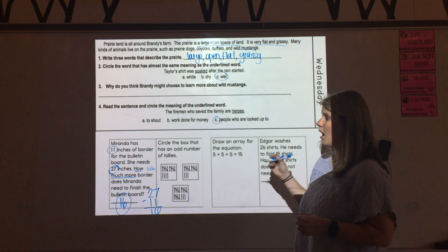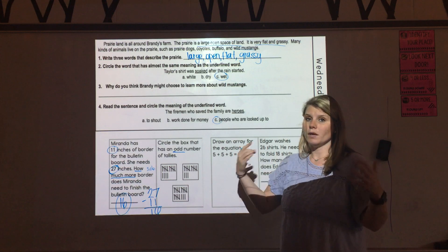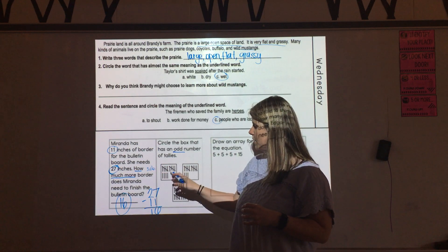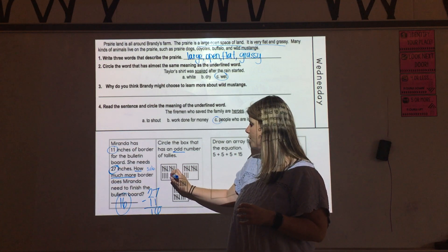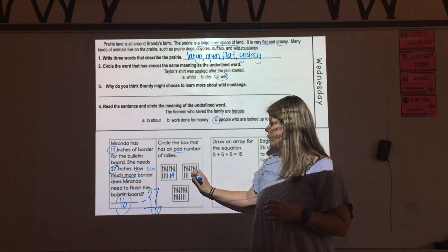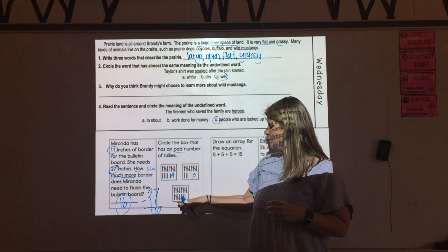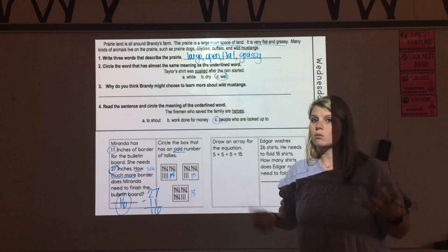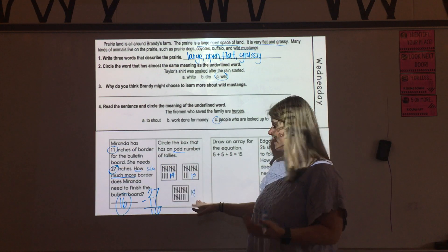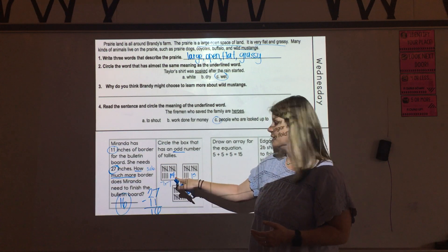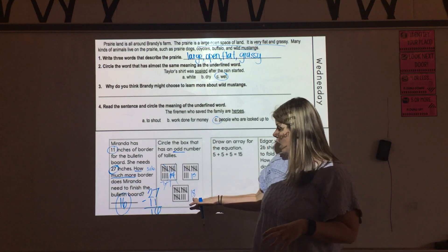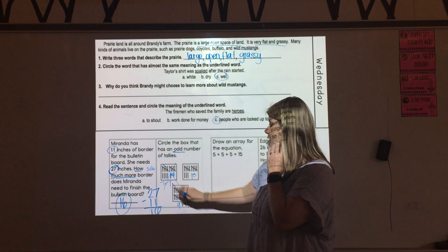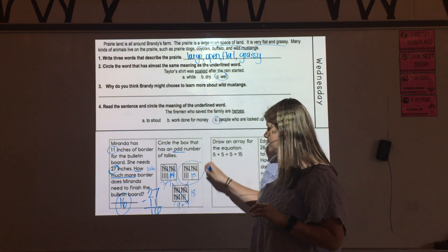This next one is asking us to circle the box that has an odd number of tallies. Now when I think of odd, remember odd means I cannot break it into two equal groups like I can even numbers. So this first box here, we count 5, 10, 11, 12, 13, 14. I'm going to write that there. Then here we count 5, 10, 11, 12, 13. And then we count 5, 10, 15, 16, 17, 18. So I've got to choose between 14, 13, and 18. Now I know that there are doubles addition facts that add up to equal 14 and 18. 7 plus 7 equals 14. So that's an even number because I can divide it into two equal groups. For this one, 18, I know 9 plus 9 equals 18, meaning it's even because I can divide it into two equal groups. So that's not it either. So the only number here that has an odd number of tallies is going to be the box with 13.